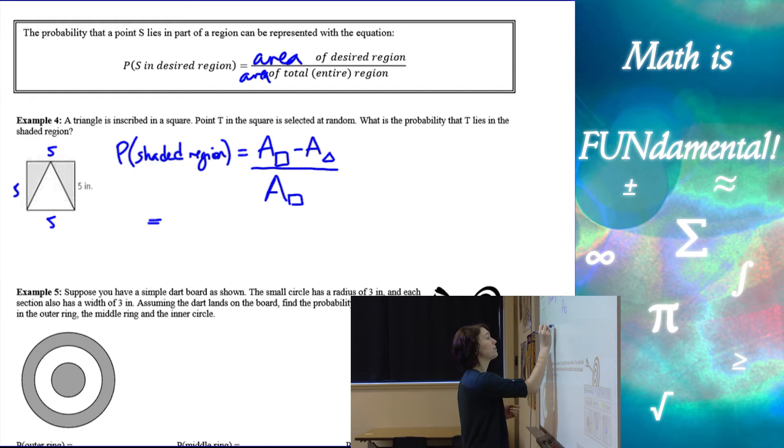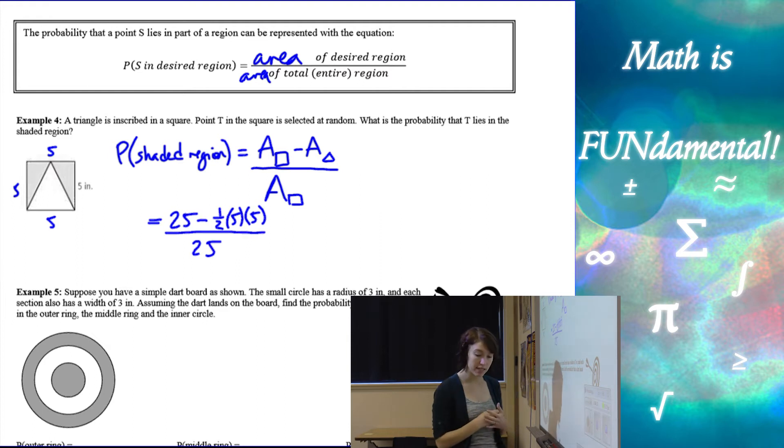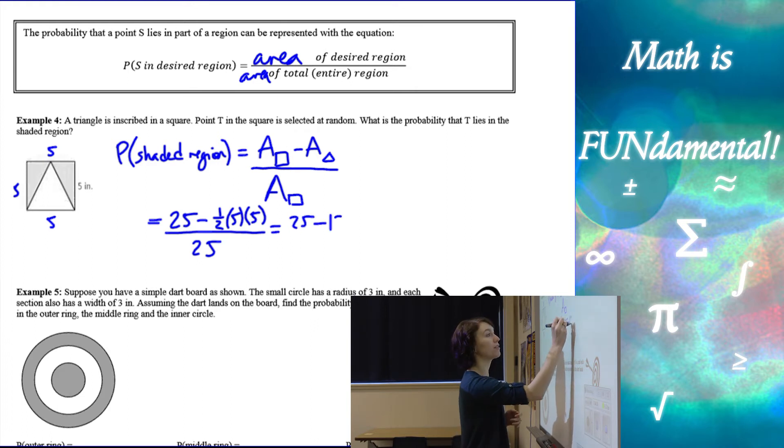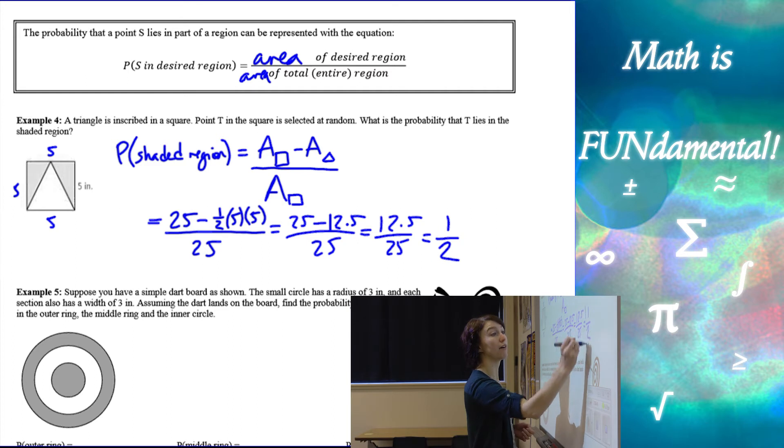So area of the square is going to be 25 inches squared minus the area of our triangle which is one half of 5 base times height which is 5 all over 25. And then we want to simplify this. So we have 25 minus, half of 25 is 12 and a half over 25 simplifies to 12 and a half over 25 which then simplifies to one half.